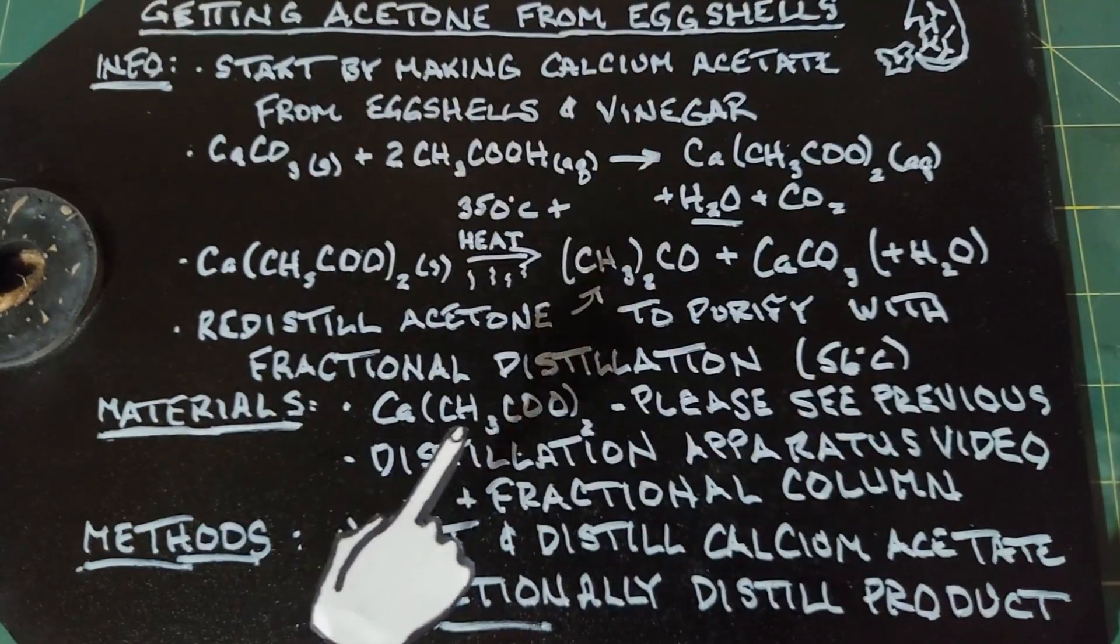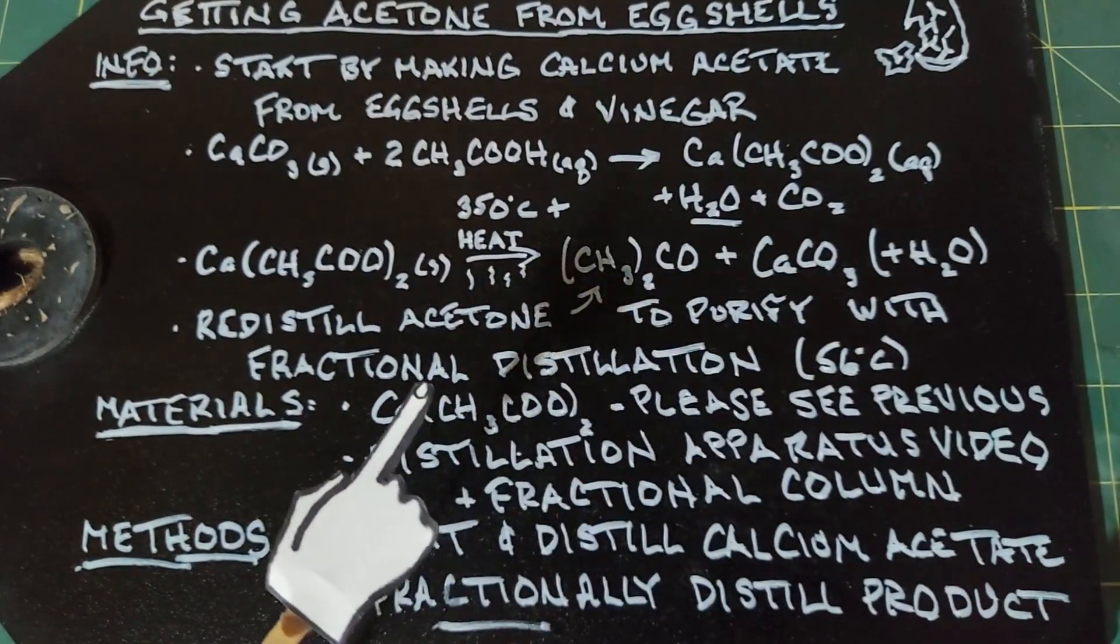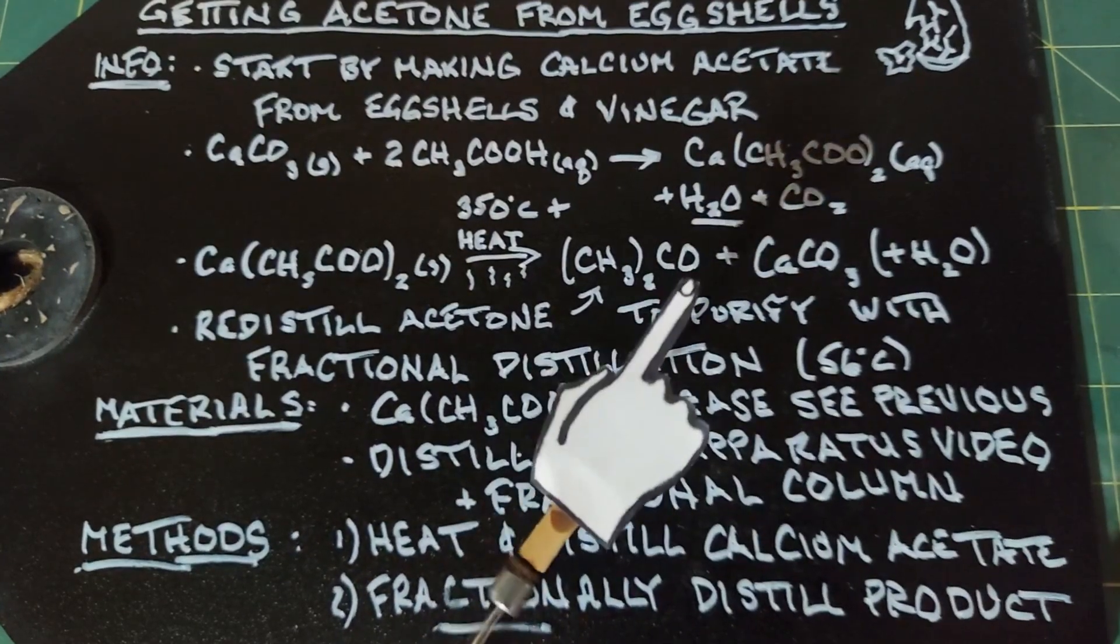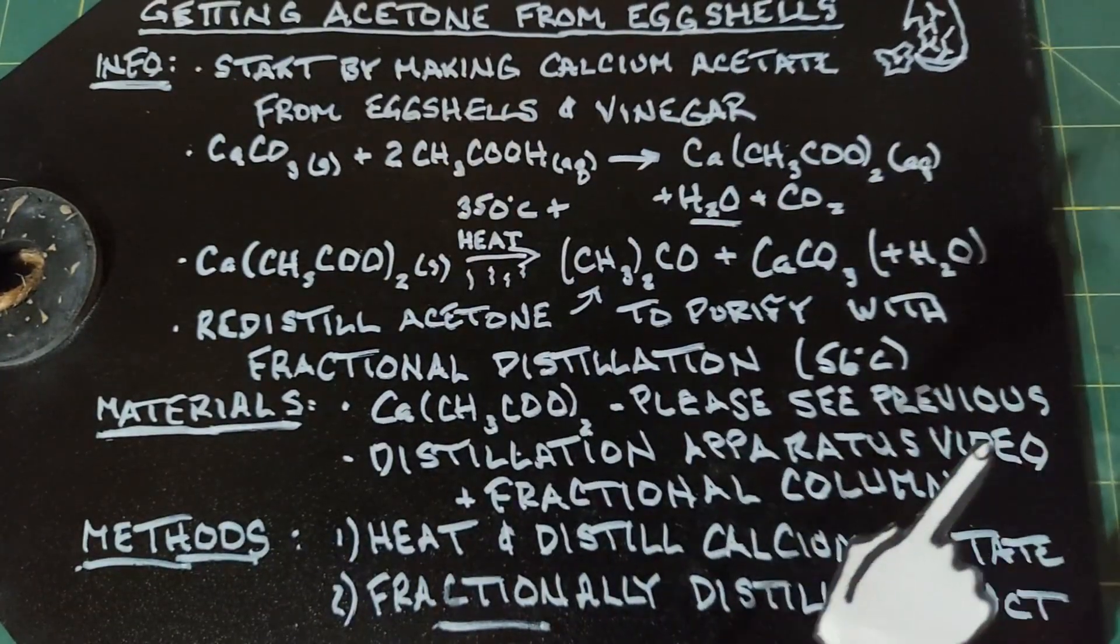For our materials, we need the calcium acetate, which again, I did in a previous video. And something of note is that when I do that, I always soak the eggshells and bleach ahead of time to get rid of all the organics. And I think because of that, I'm going to get a better yield in this particular part of the experiment here.